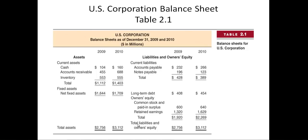It balances. For 2010, it's $3,112,000,000 on both sides — total assets and total liabilities and owner's equity. So it has to balance.